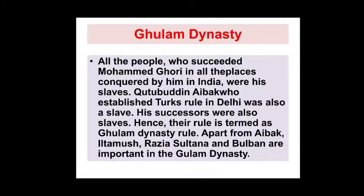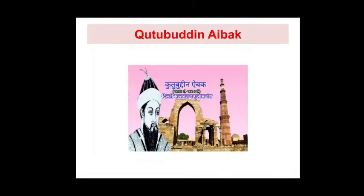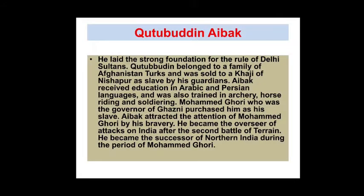Apart from Aibak, there were many rulers. Aibak, Iltamash, Razia Sultan, and Balban are the most important kings in the Ghulam Dynasty. Qutubdin Aibak was the first king — he built the Qutub Minar. He was the founder of the Ghulam Dynasty and gave a strong foundation for the rule of the Delhi Sultanate.